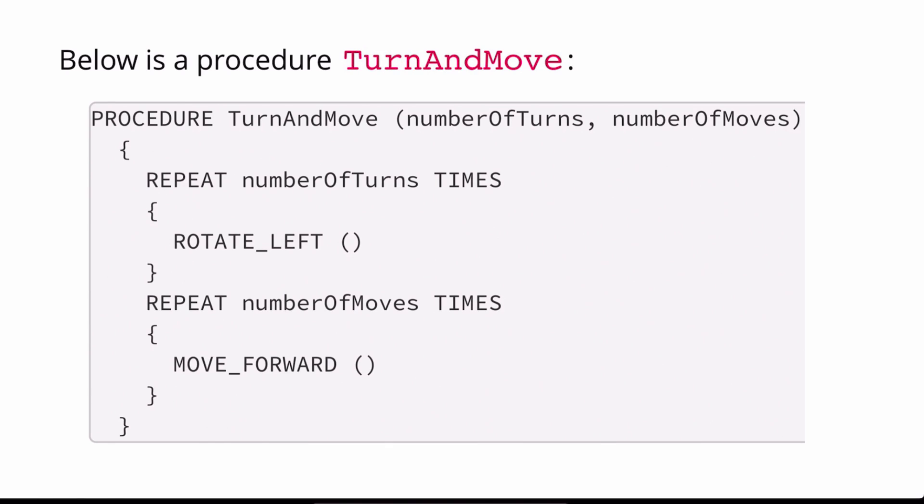First, the procedure turn and move has two parameters, number of turns and number of moves. It takes both of these as input. Next, we take whatever was input into number of turns and repeat this line or this block that many times. And in this block, we are rotating left.